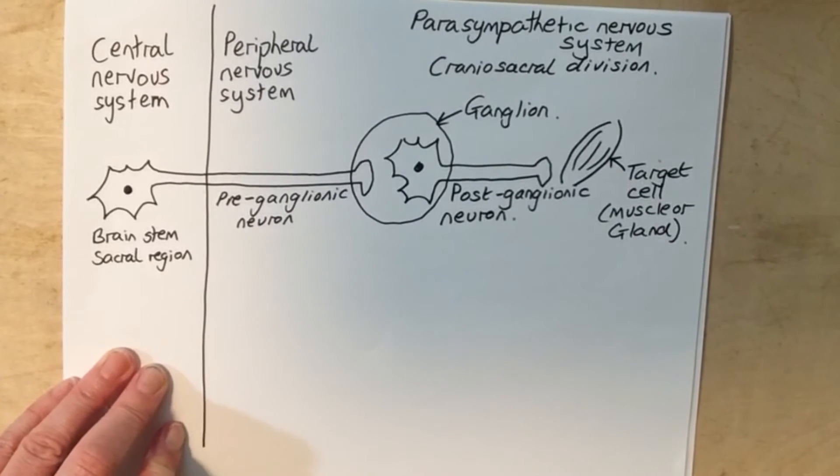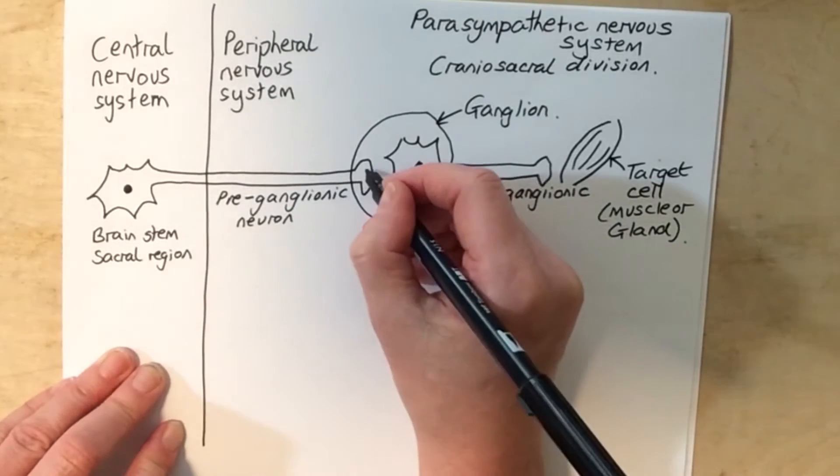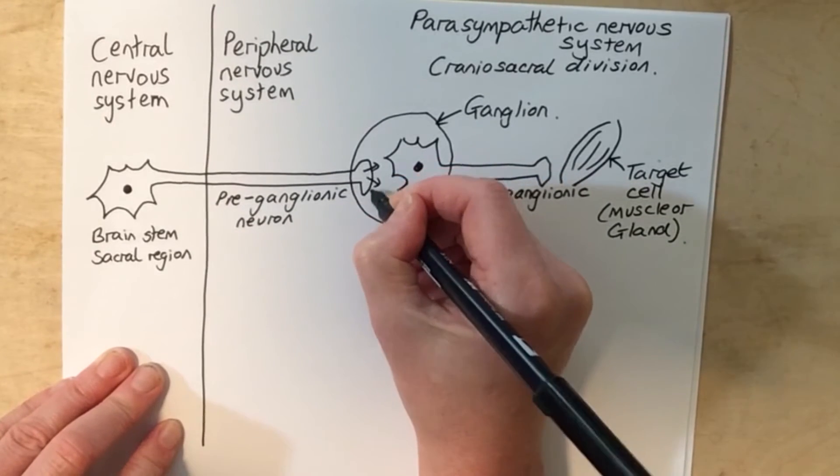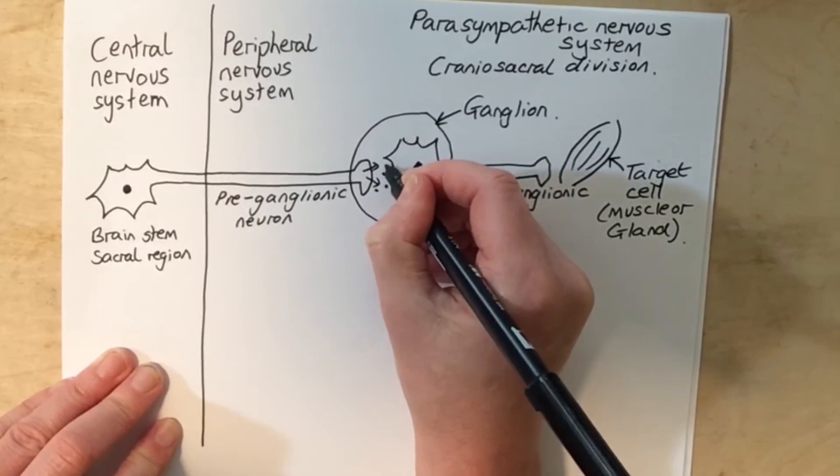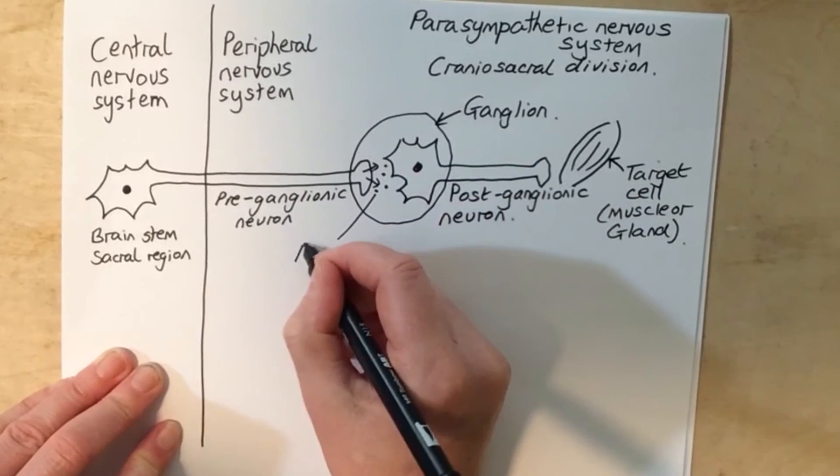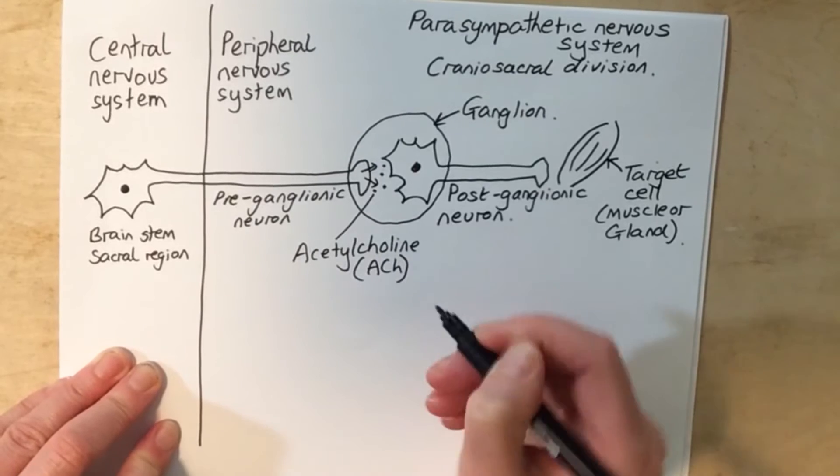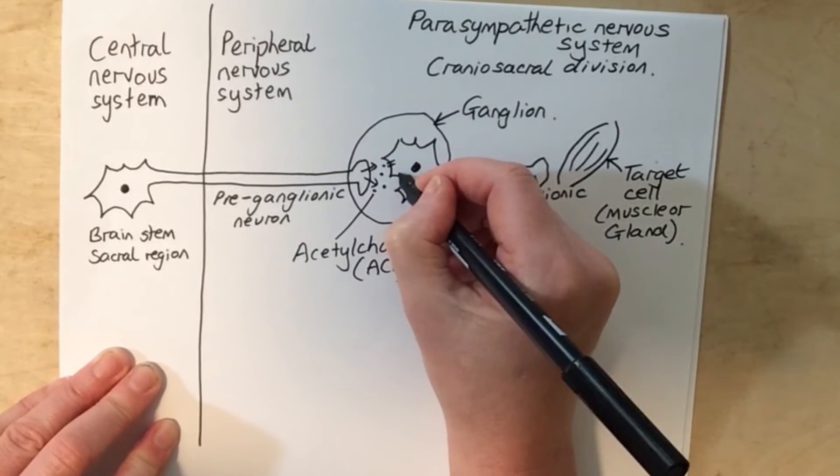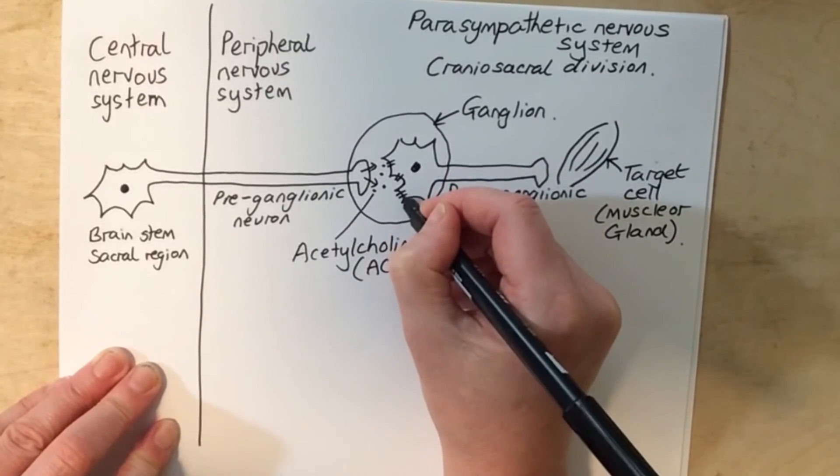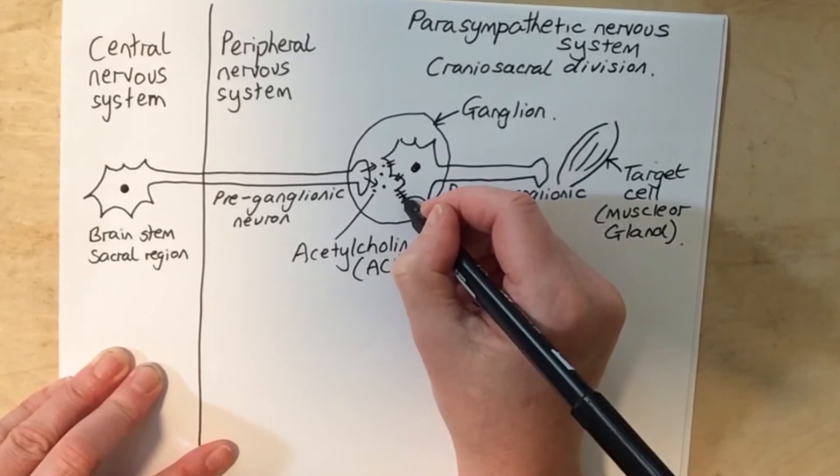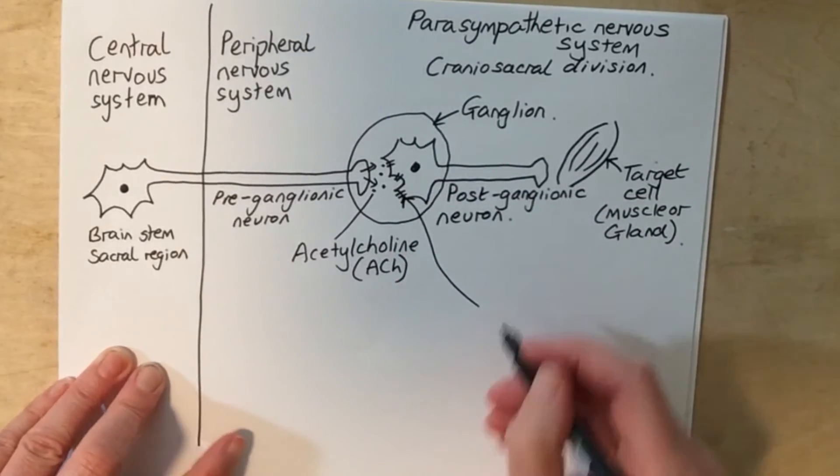In terms of the neurotransmitter, a neurotransmitter called acetylcholine is released from the axon terminal of the preganglionic neuron, ACH for short, and this will bind to the nicotinic cholinergic receptors within the cell bodies of the postganglionic neuron.